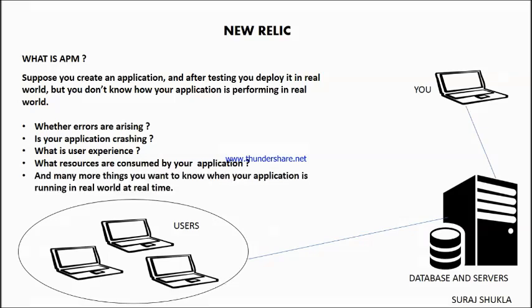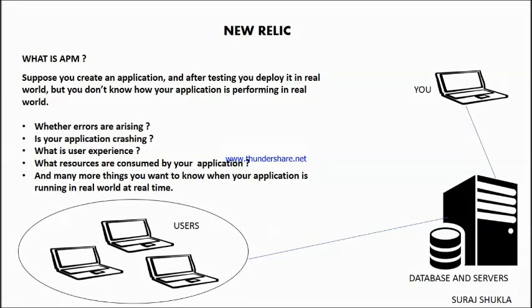There are many things you want to know about your application running in the real world in real time. For example, is there any user experiencing a slow transaction? You want to know it in real time, not when the user reports it. That's where APM comes into play.